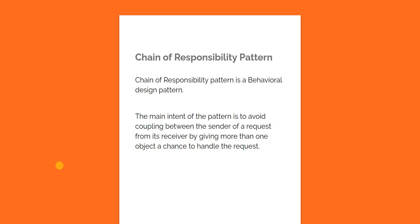What it means is, just like all other behavioral design patterns, the main intent is to focus on object composition rather than inheritance — something we have seen with the State pattern as well as the Observer pattern. Chain of Responsibility follows the same behavior. Instead of one class handling the request, we divide the request into multiple handlers, and based on the situation, the handler decides whether to propagate the request to the next level or not.